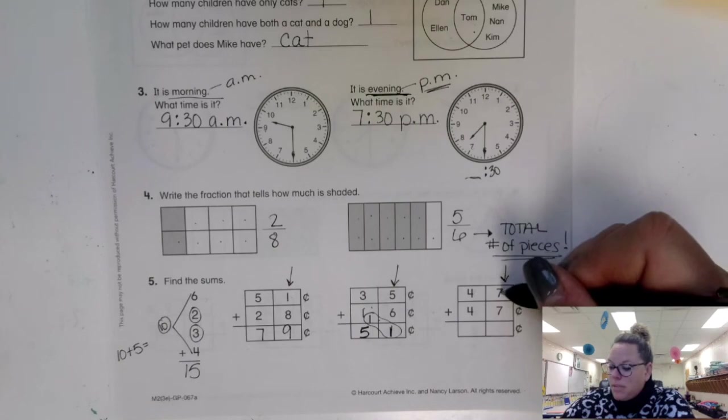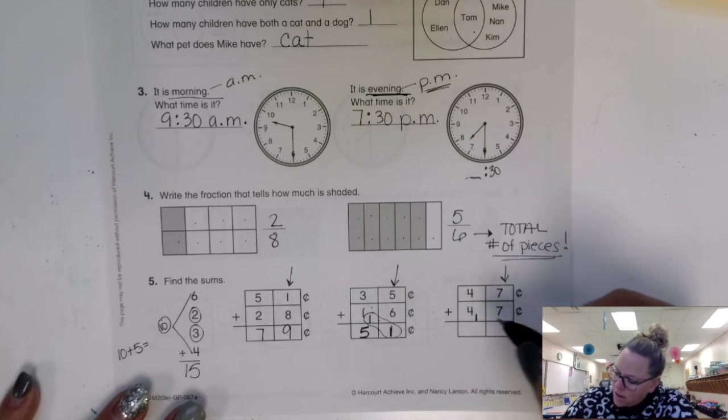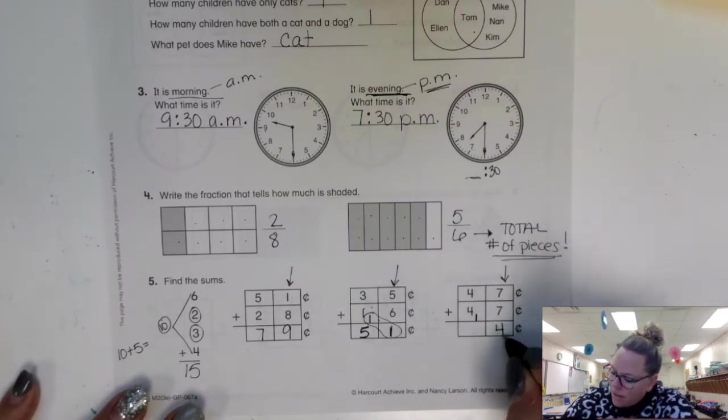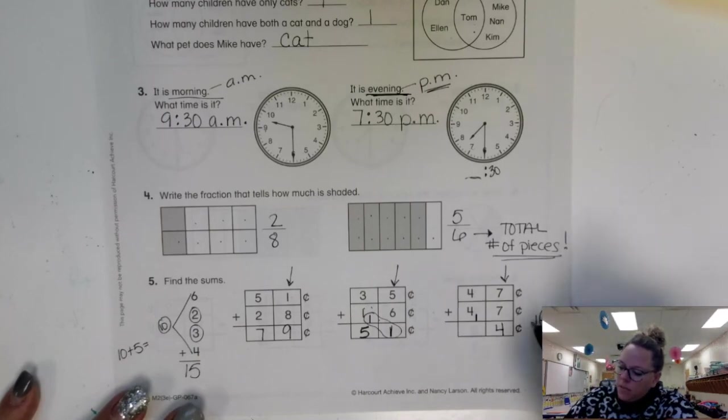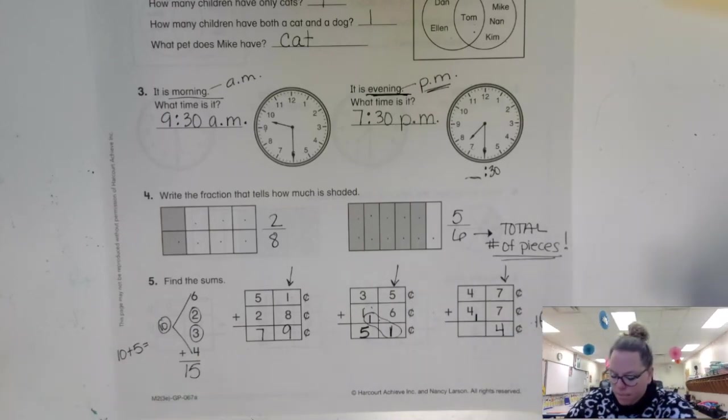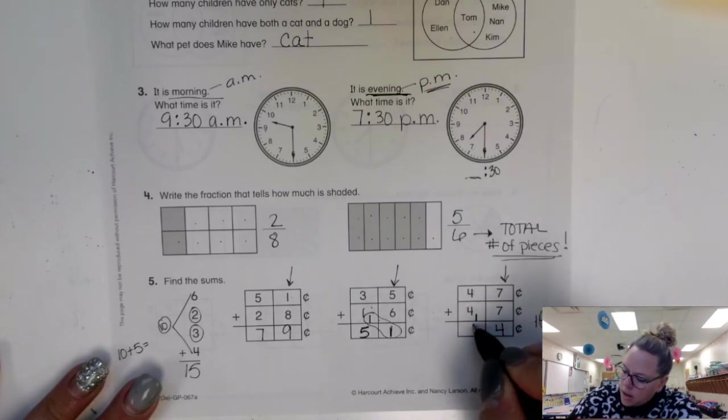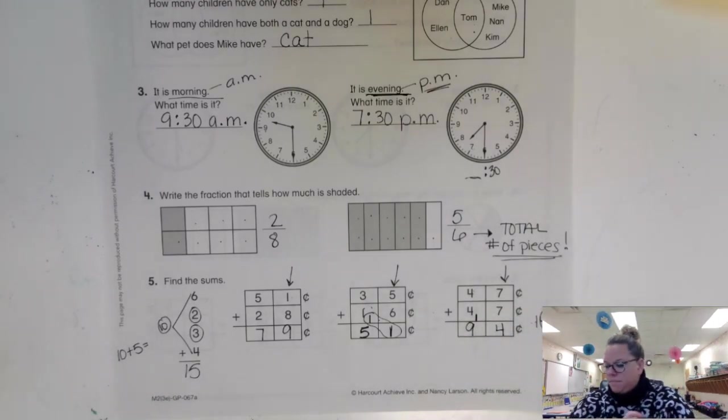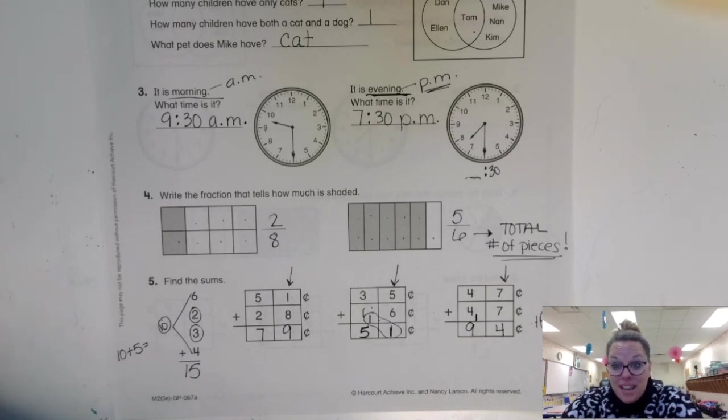And our last problem. Seven plus seven is 14. Carry your one because we traded it and we're left with four. Here was your number 14, right? This helps you to know. The four is going to be left over. The one gets traded away. Now four plus four is eight and eight plus one is nine. Now that we have finished that front side, the back side is for you to show me what you've learned. When you're done with this sheet, go ahead and put it into your Tuesday folder.